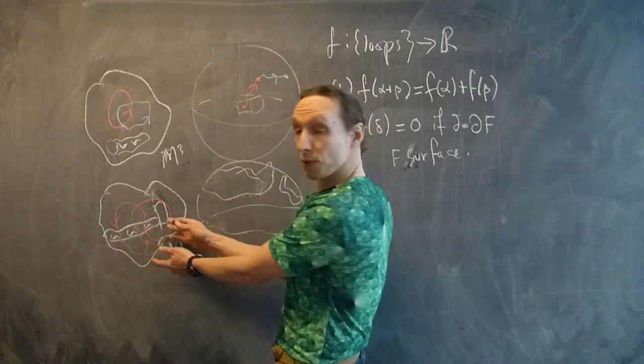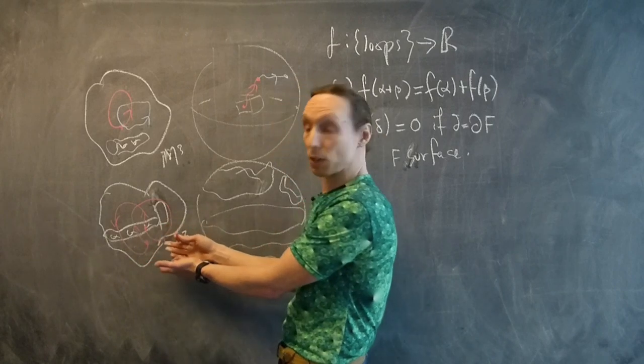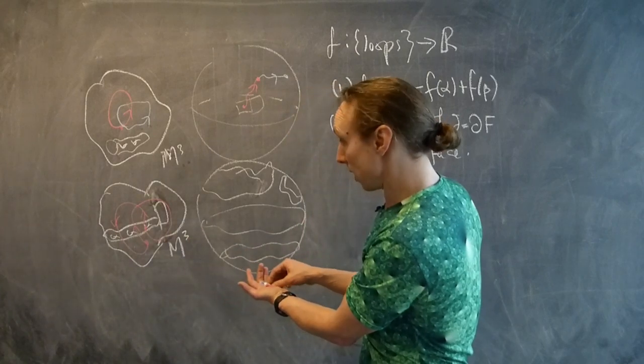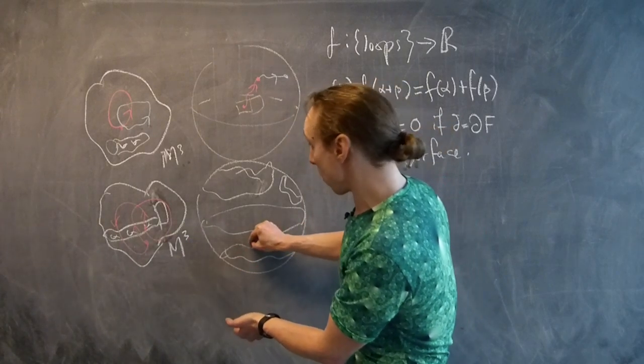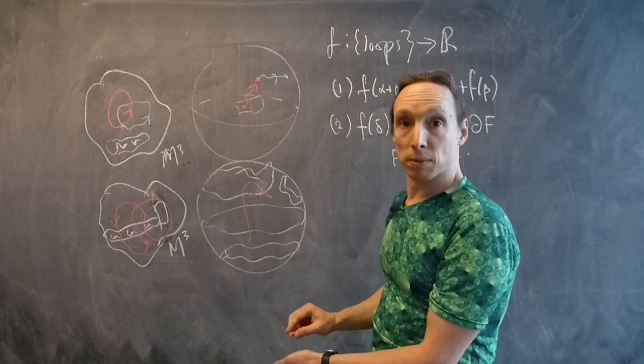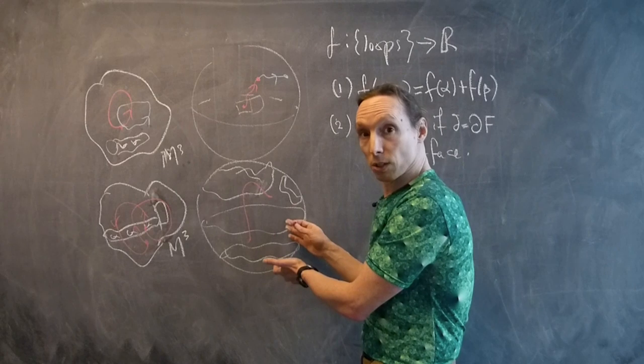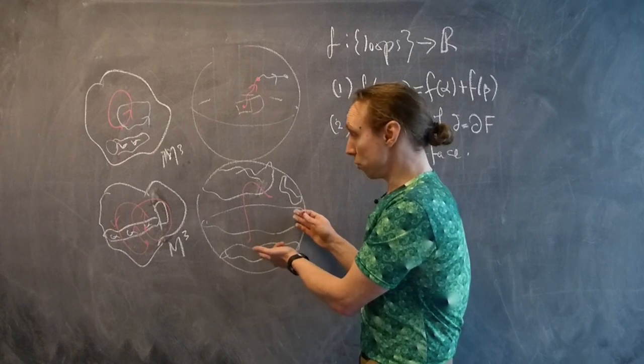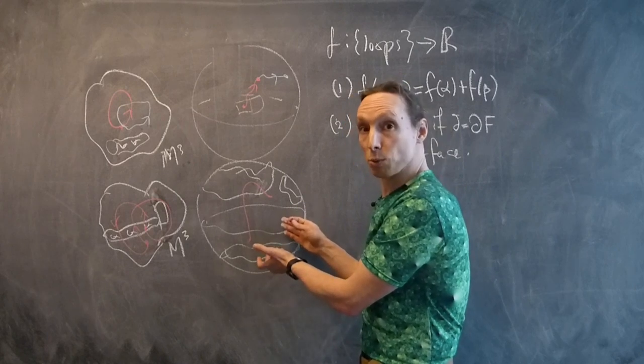In other words, anytime you have a surface in the manifold, you get a cohomology class by counting the number of intersections. So here in the universal cover, we'd go positive once and then like so, something like that.